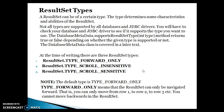A ResultSet can be of a certain type. The type determines some characteristics and abilities of the ResultSet. Not all types are supported by all databases and JDBC drivers — you will have to check using DatabaseMetaData. The method supportsResultSetType accepts these three constants: TYPE_FORWARD_ONLY, TYPE_SCROLL_INSENSITIVE, and TYPE_SCROLL_SENSITIVE. If this returns true, then that ResultSet type is supported by your database. The ResultSetMetaData class will be covered in the next video.